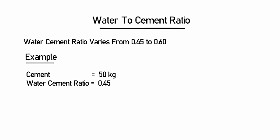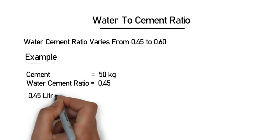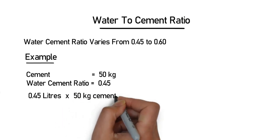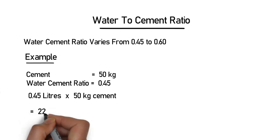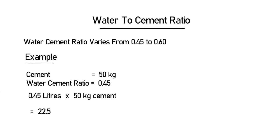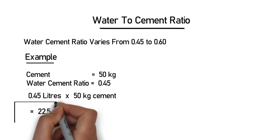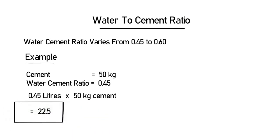The formula to calculate the water needed: we use 0.45 multiplied by 50 kg of cement, which gives you 22.5 liters. So it means that we need 22.5 liters per 50 kg. 50 kg is usually the weight of one bag, so for one bag we will need 22.5 liters of water.